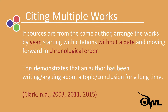To cite multiple works by the same author, arrange the works by year, beginning with citations without a date and then moving forward in chronological order. In this case, you need only list the author's last name once. You might make this sort of citation if you're trying to demonstrate that an author has been writing about a certain topic or arguing a certain conclusion for a long time.